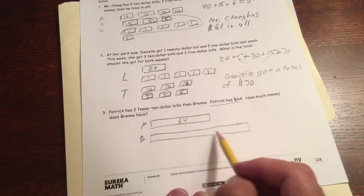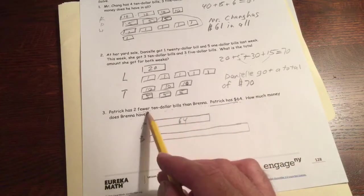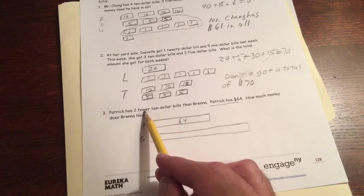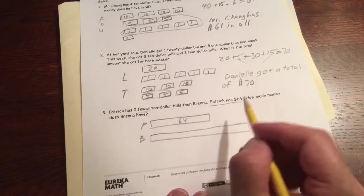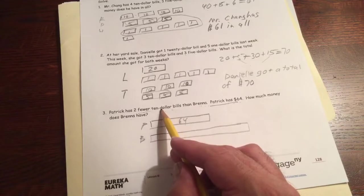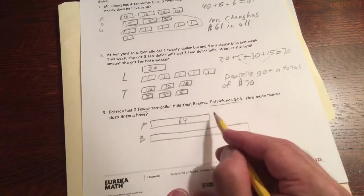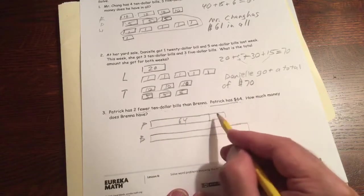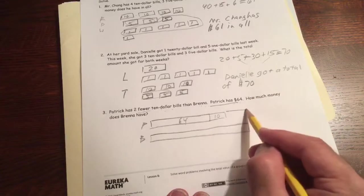He has two fewer $10 bills than Brenna. If he has fewer or less, then Brenna has to have more. So Brenna's going to have to have more. There's Brenna. And we know how much more. Patrick has two fewer $10s. So if he has two fewer $10s, that's $20, right? It's a $10. You should make it look like money here. A $10 and a $10.